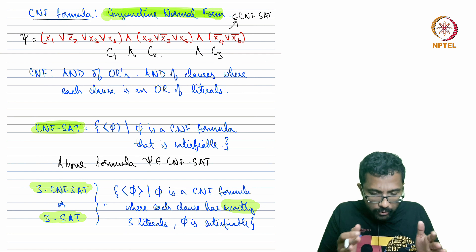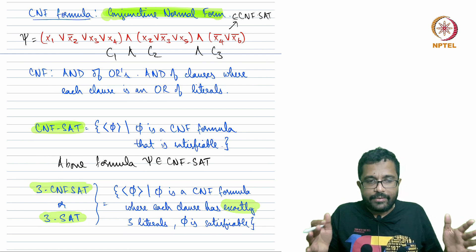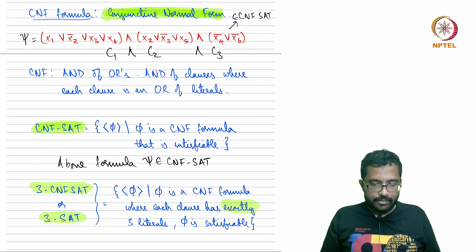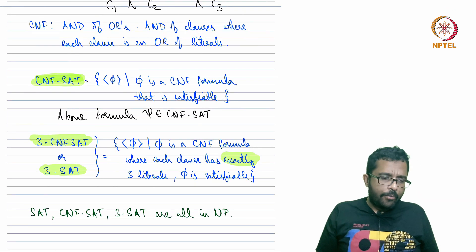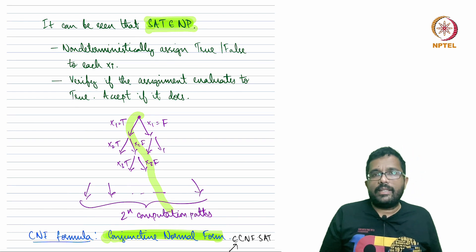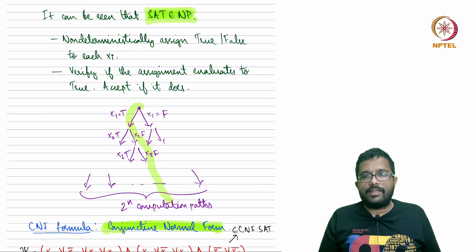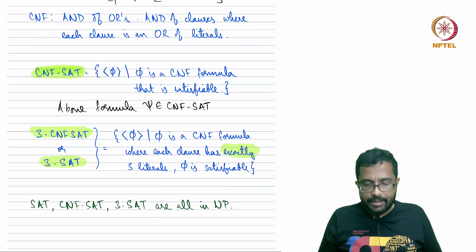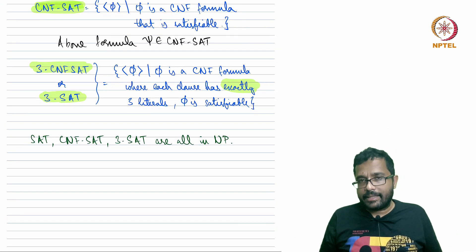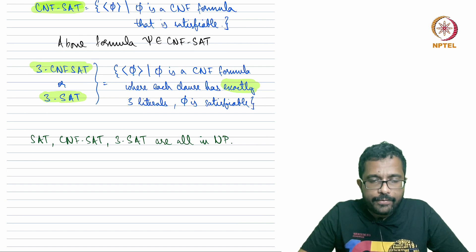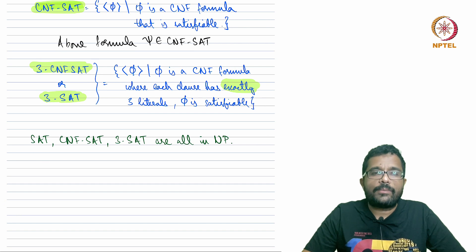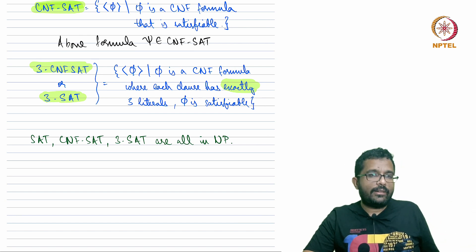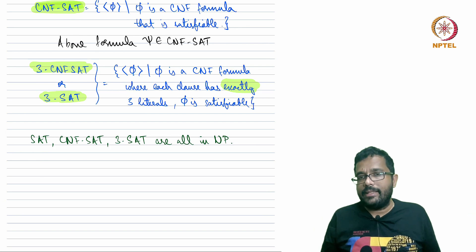The hope is that a specific structural restriction might make satisfiability easier to determine. The same NP approach used for SAT applies to CNFSAT and 3CNFSAT: non-deterministically guess an assignment and verify whether it satisfies the formula. If the guessed assignment satisfies, accept; otherwise reject. If the formula is satisfiable, one guess will lead to acceptance; if not, all guesses reject.